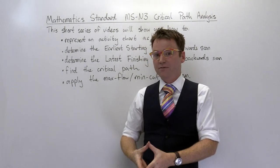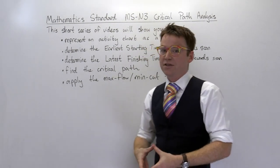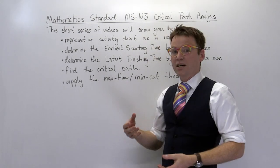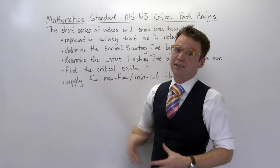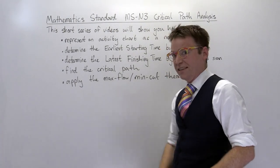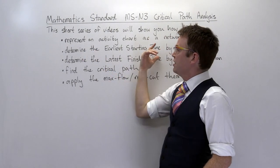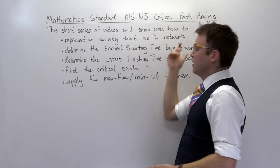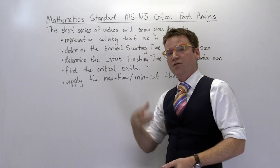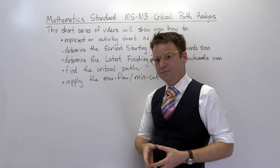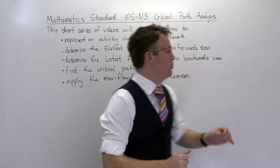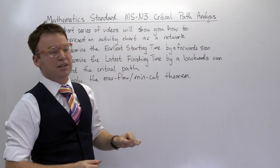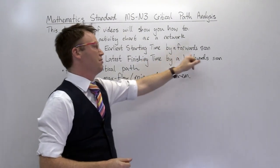This particular course will cover the fundamentals, so by the end of this series of videos and exercises you'll know all the stuff that the syllabus defines. In particular, you'll be able to represent an activity chart — a list of things — as a network. The reason we do this is so we can reason with it later on. Once you've got your network, you can determine the earliest starting time for activities by means of a forward scan.